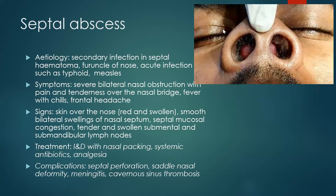A septal abscess is a collection of pus between the septal cartilage and the mucopericondrium, or between the septal bone and the mucoperosteum. The etiology usually comes from secondary infection in a septal hematoma, or a furuncle in the nose spreading to the septum, or acute infections such as typhoid and measles causing collection of exudates within the mucopericondrium and cartilage. Symptoms include severe bilateral nasal obstruction, pain and tenderness over the nasal bridge, fever, chills, and frontal headache.